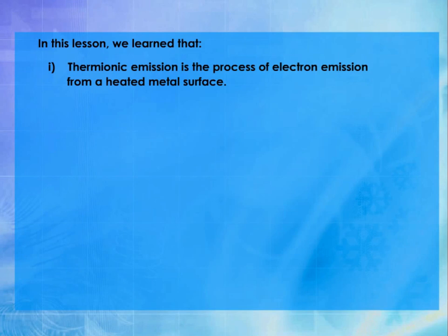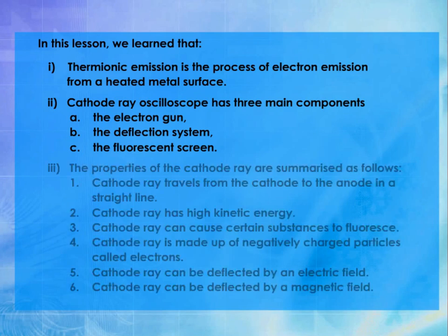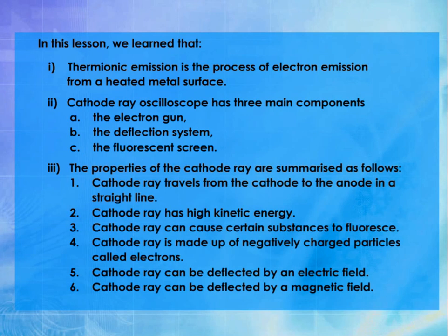In this lesson, we learned that: 1. Thermionic emission is the process of electron emission from a heated metal surface. 2. The cathode ray oscilloscope has three main components: a. the electron gun, b. the deflection system, and c. the fluorescent screen. 3. The properties of the cathode ray are: 1. Cathode ray travels from cathode to anode in a straight line. 2. Cathode ray has high kinetic energy. 3. Cathode ray can cause certain substances to fluoresce. 4. Cathode ray is made up of negatively charged particles called electrons. 5. Cathode ray can be deflected by an electric field. 6. Cathode ray can be deflected by a magnetic field.